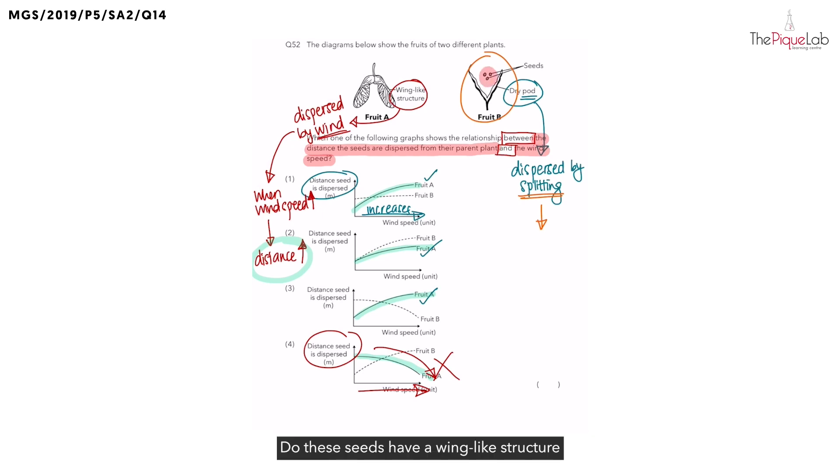Do these seeds have a wing-like structure that allows the seed to float in the air longer when the wind speed increases? No, right? The seeds do not have a wing-like structure. Therefore, the distance the seed of fruit B is dispersed is not affected by the wind speed.